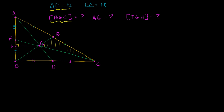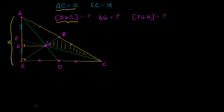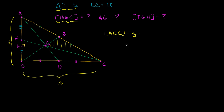This is a right triangle, as they tell us. AE, this entire distance, is 12, and EC is 18. So the area of triangle AEC is going to be equal to one-half times the base, which is 18, times the height, which is 12. That equals 9 times 12, which is 108. That's the area of this entire right triangle AEC.